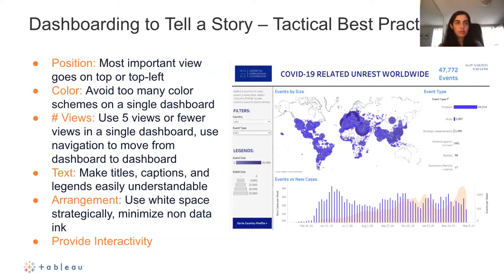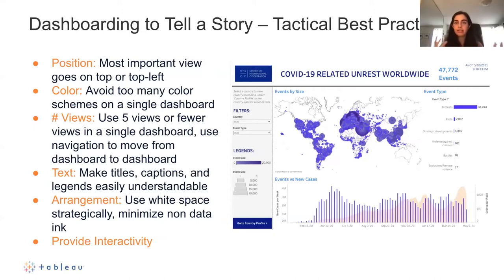Regarding color: avoid too many color schemes on a single dashboard. A single bright color like orange or blue should be used consistently, as seen in the hotel executive dashboard. In the COVID-19 crisis dashboard, purple designates crisis or protest events, and orange is used to compare those events to new COVID-19 cases per week. Regarding number of views: five or fewer views in a single dashboard is the best practice — exceeding five can add visual noise and confusion. Navigation between dashboards can accommodate additional information.